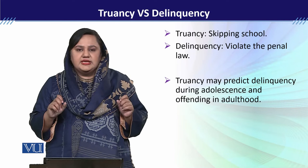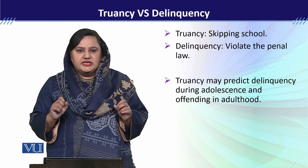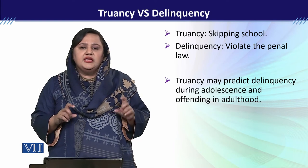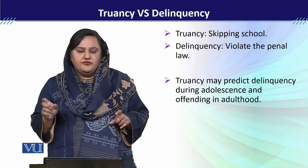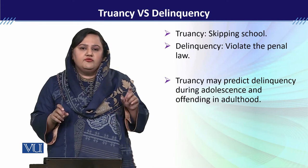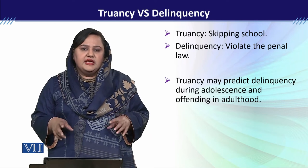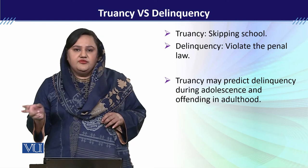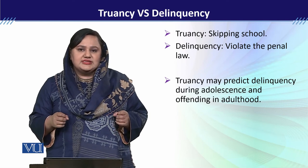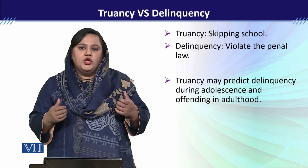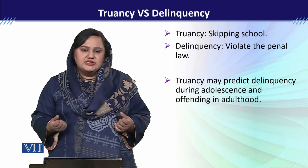जब बच्चे school skip करते हैं तो उसे truancy कहते हैं। ये terms आपको आमतौर पर literature में vice versa मिलेंगी — उसकी वजह ये है कि truancy, delinquent behavior का predictor है। तो वो बच्चे या adolescents जो truancy behavior exhibit करते हैं, it is more likely कि वो delinquent behaviors भी exhibit करें। That's why ये दोनों terms simultaneously आती हैं, और इनका difference समझना important है — कब एक behavior को truancy कहोगे और कब delinquency।